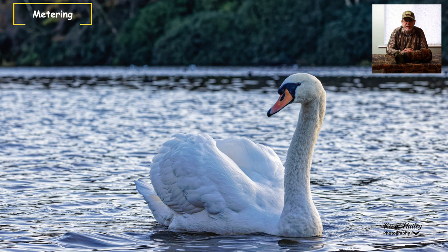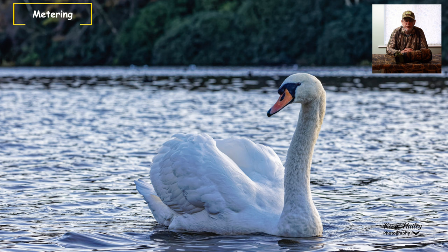When we look through the viewfinder of our cameras to take a photograph, this is what we the photographer see. In this picture you'll see a nice white swan with a bright orange bill, the water reflecting off the surface. That's what we see. However, our camera's light meter sees something completely different. What a light meter sees and measures is different to what we see with our human eye.